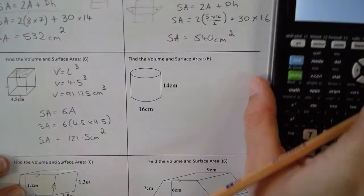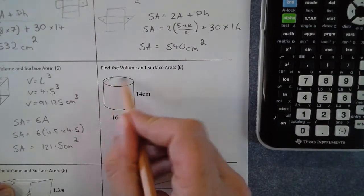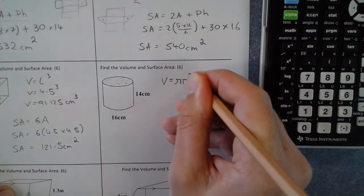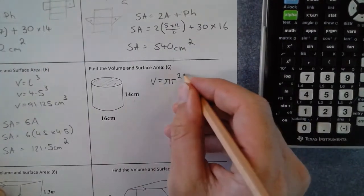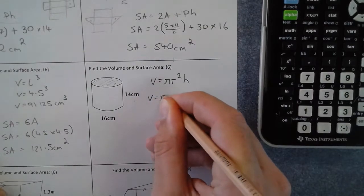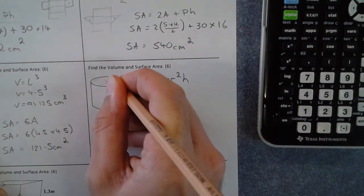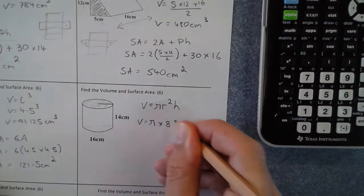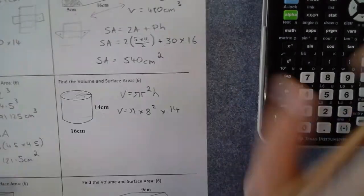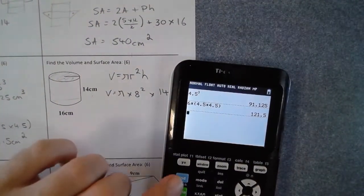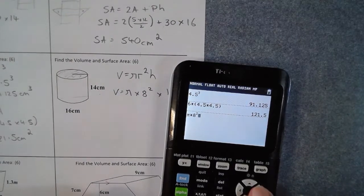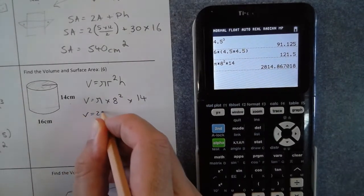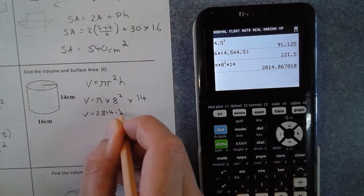For the cylinder, the volume is the area of the face times the height. The face is a circle, so area equals pi r squared, then multiplied by the height h. The diameter is 16, so the radius is 8, and the height is 14. Typing pi times 8 squared times 14 into the calculator gives a volume of 2814.87 cubic centimeters.